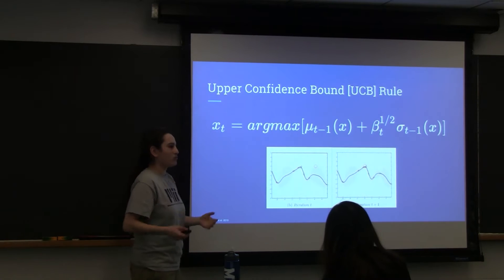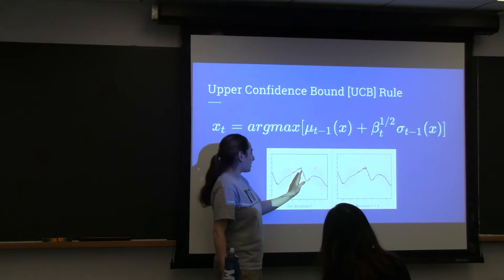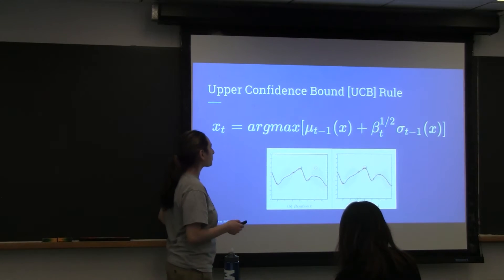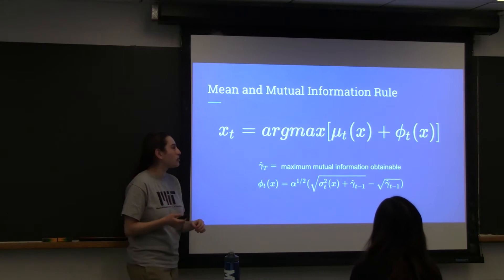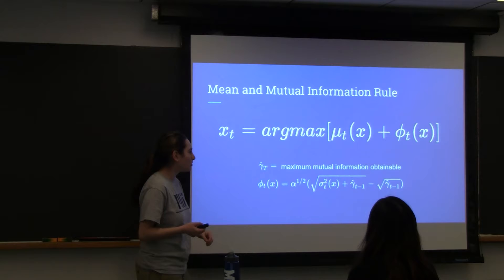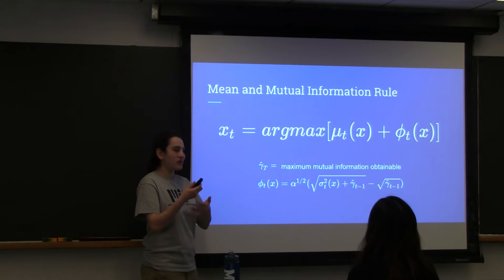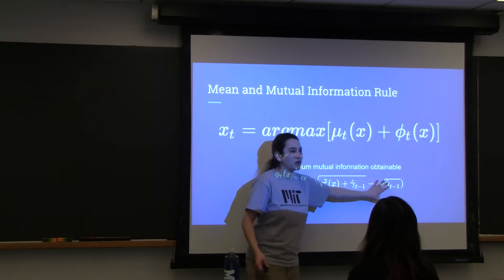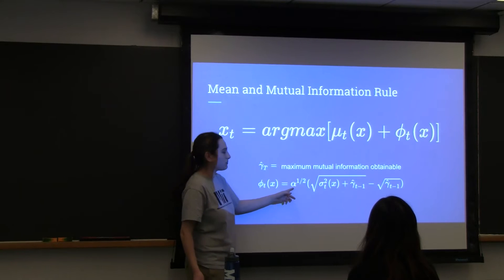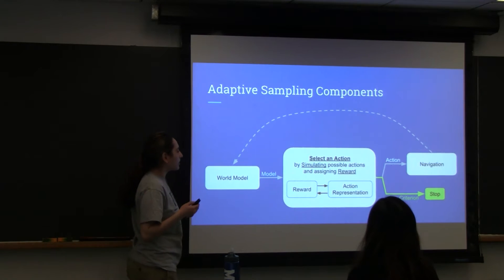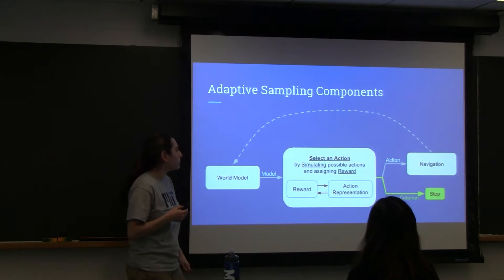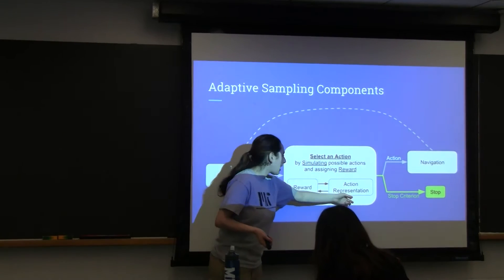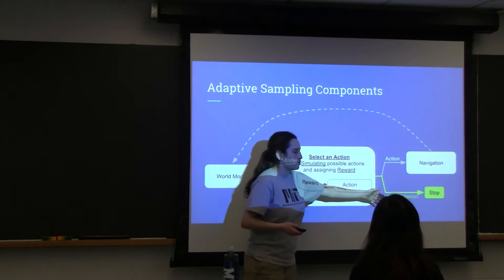Another approach uses mutual information. It's basically the same idea — we have the mean plus the variance, but here the variance is also a function of the mutual information. The last thing to talk about is how you stop your adaptive sampling. Now that we've covered the different actions and how to assign rewards, the question is: how do you stop?